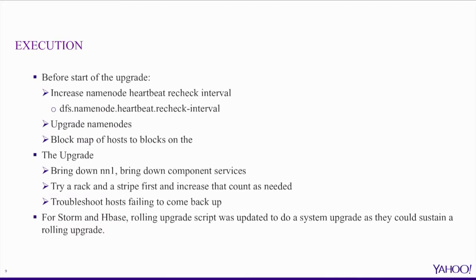A day before the upgrade, we would push out the new kernel onto all of the hosts in the system and run some basic validation to make sure everything looks good. On the day of the upgrade, we would start off with a name node settings change. For instance, we increased the name node heartbeat recheck interval — this setting has a default value of 10 seconds, we relaxed it to 20 seconds, mainly because we did not want the name nodes to be too sensitive to not hearing back from the data nodes. A settings change required a name node process restart, so we used this as an opportunity to upgrade the name nodes: do a settings change, restart the standby, failover, restart the primary, and the name nodes would be up with the new kernel.